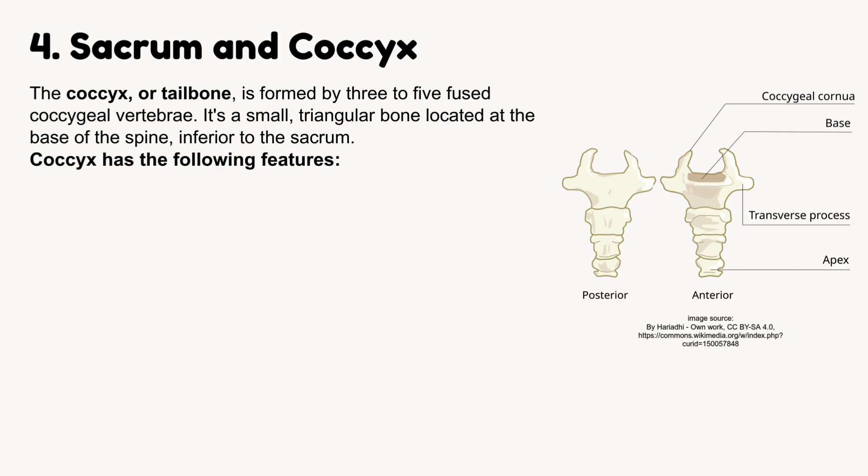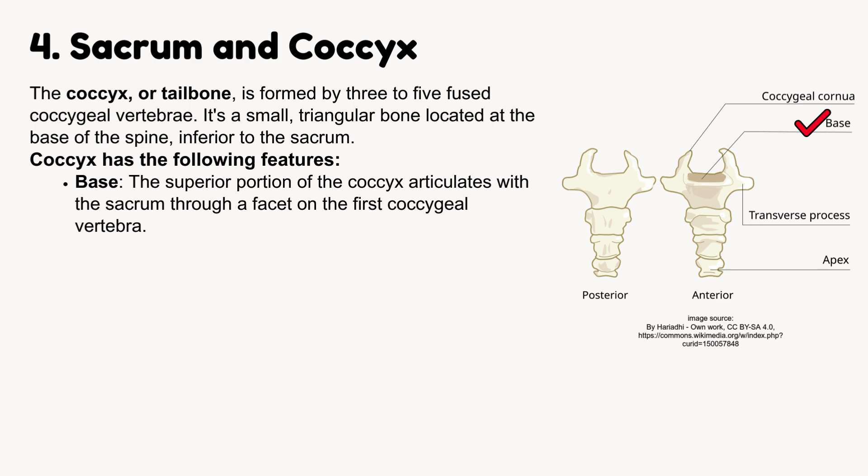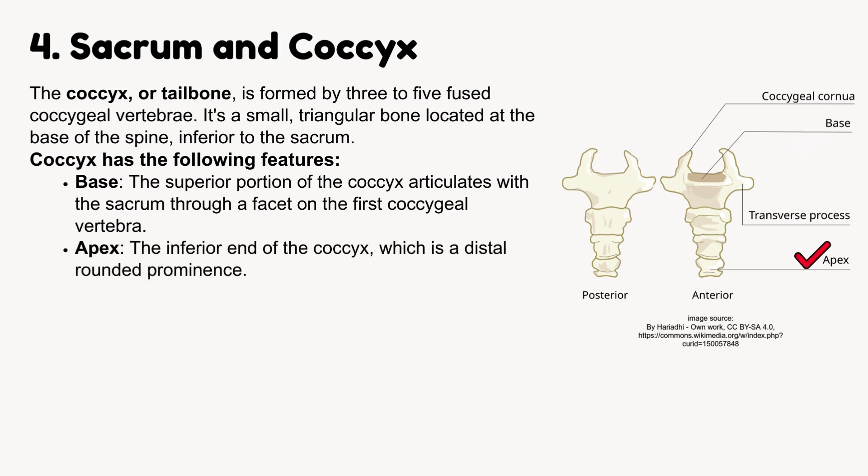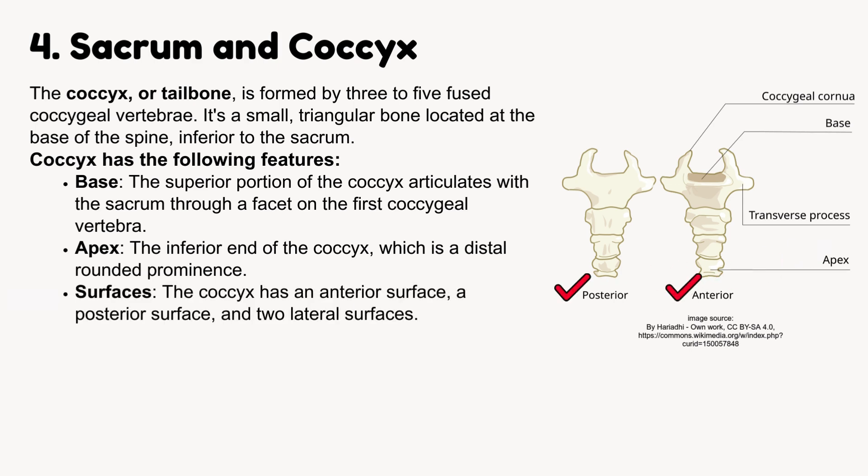The coccyx has the following features. Base: the superior portion of the coccyx articulates with the sacrum through a facet on the first coccygeal vertebra. Apex: the inferior end of the coccyx, which is a distal rounded prominence. Surfaces: the coccyx has an anterior surface, a posterior surface, and two lateral surfaces.